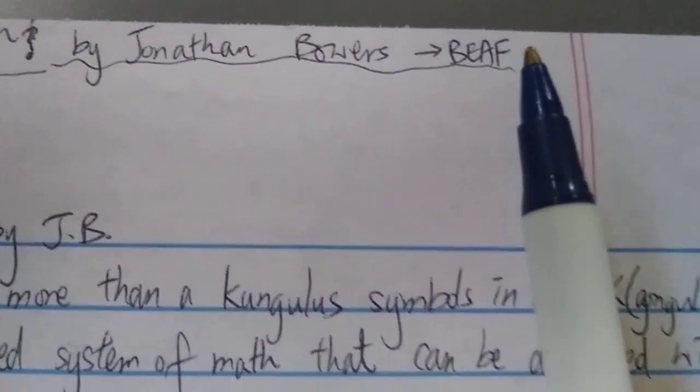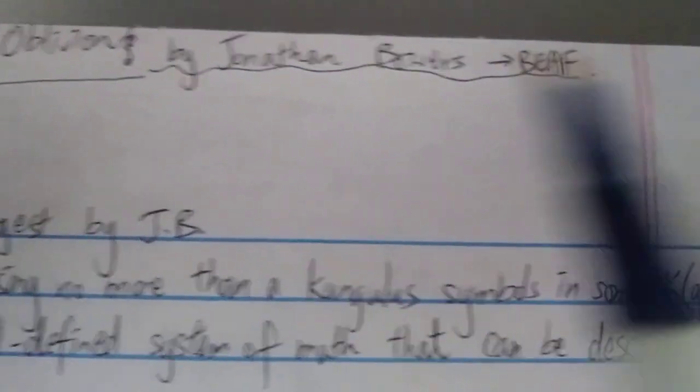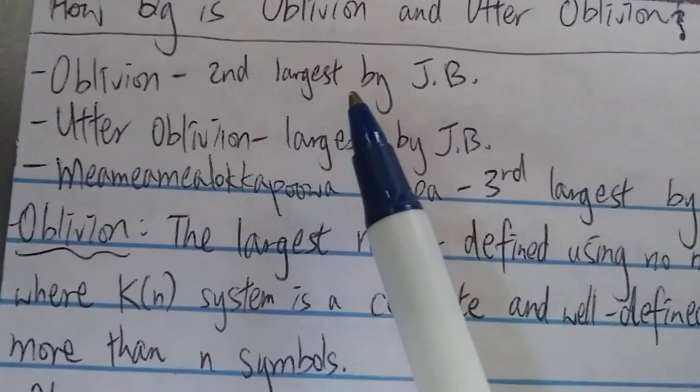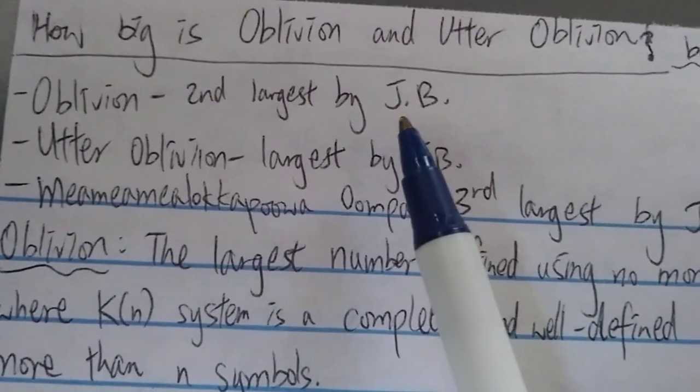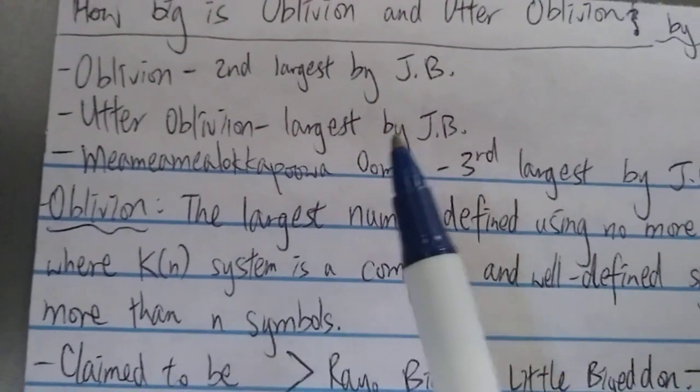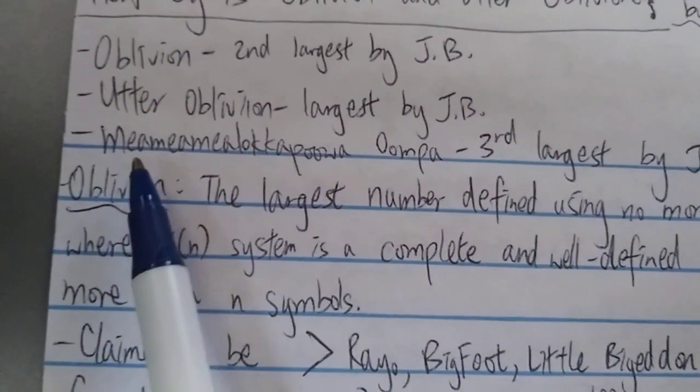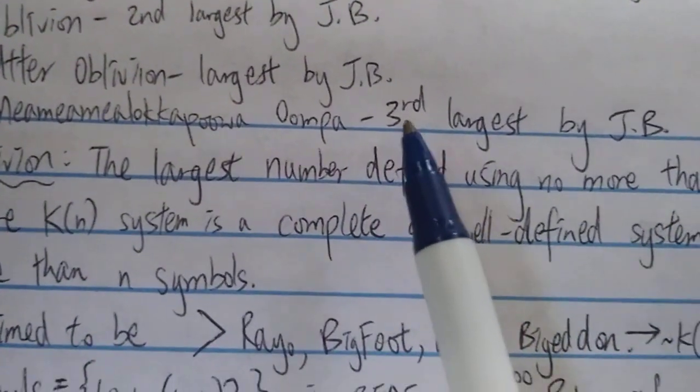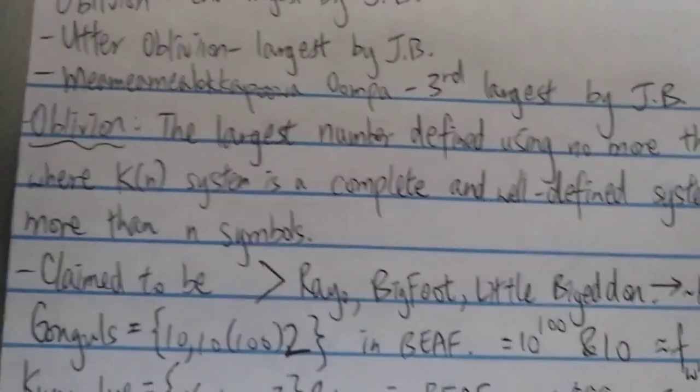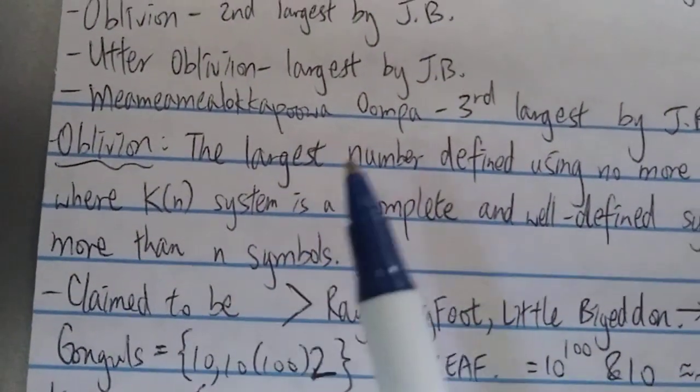So basically the oblivion I think is the second largest number ever created by Jonathan Bowers, and the utter oblivion is the largest number ever created by him. This famous number is probably the third largest by Jonathan Bowers, so he basically created many famous big numbers.